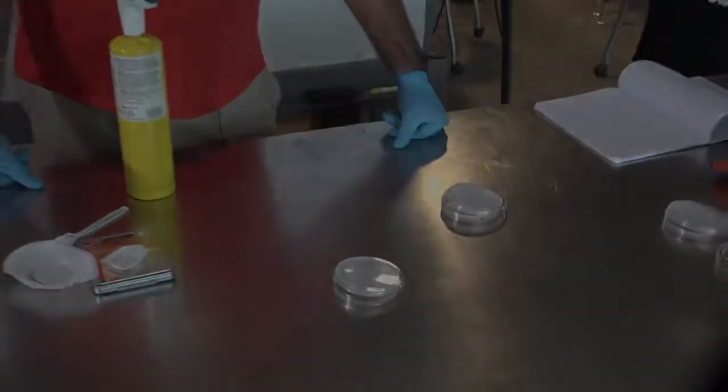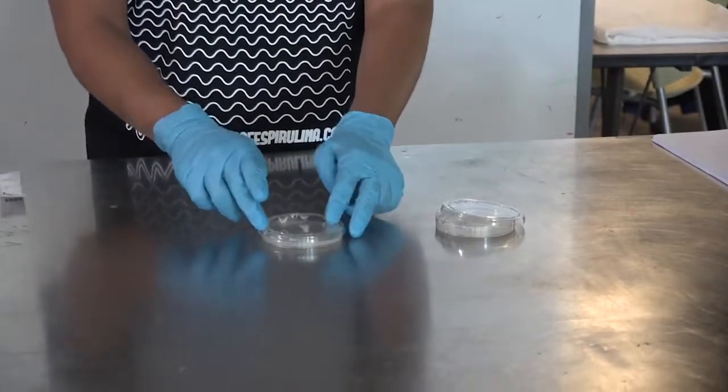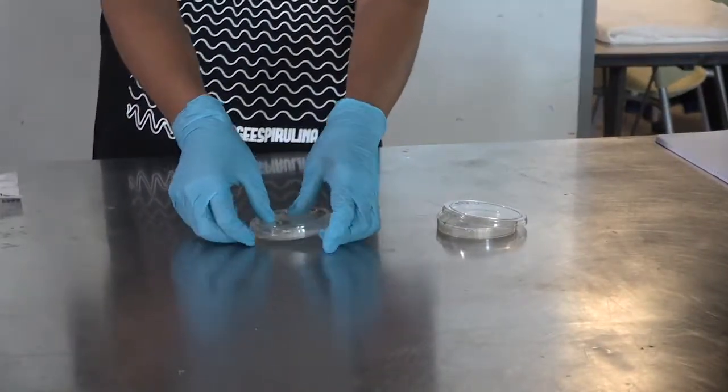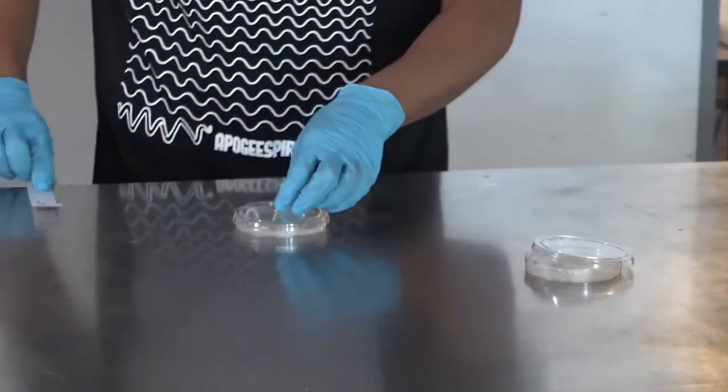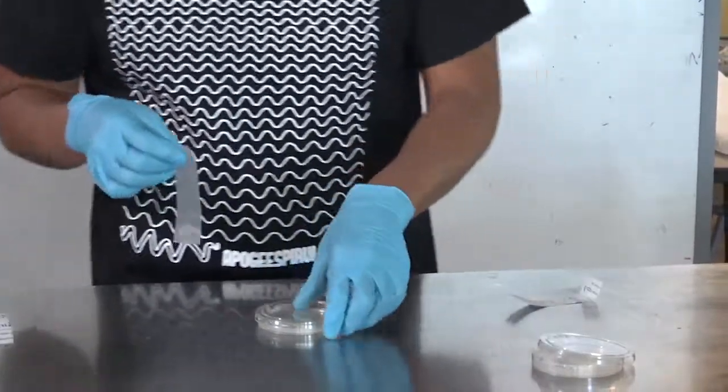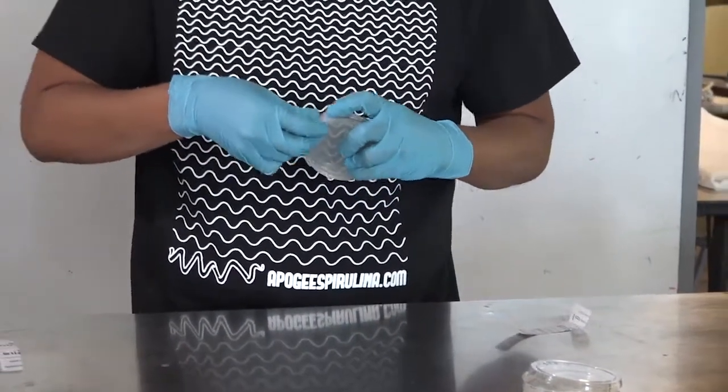Now we wait for this to cool. After they've solidified, you want to put the lid on it to cover it completely and wrap them in parafilm around the edges. You just slowly pull it to seal the plate.